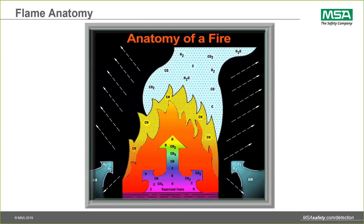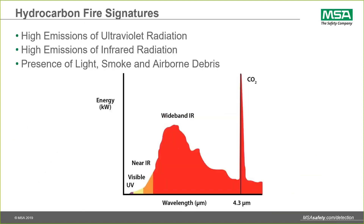If you look at that signature on the next slide, the hydrocarbons — as you look at energy as a function of light wavelength across the bottom — you'll see the emissions. You'll have some ultraviolet, some mid-infrared, and also some light, some smoke, some airborne soot and debris. But one characteristic very common to hydrocarbon fires is this CO2 emission peak centered on the 4.3 micron light wavelength. That is a consistent signature of all hydrocarbons, ranging from solid materials to liquid materials, and that is a frequency of light that most manufacturers of optical flame detectors are very interested in measuring.